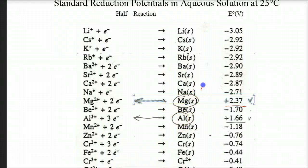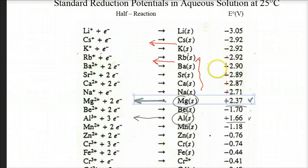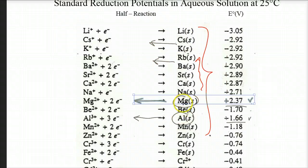As you climb this table, the voltages in the reverse get larger and more positive because these metals love to oxidize. Magnesium is more reactive, so magnesium loses electrons better than aluminum — and therefore magnesium is the anode.